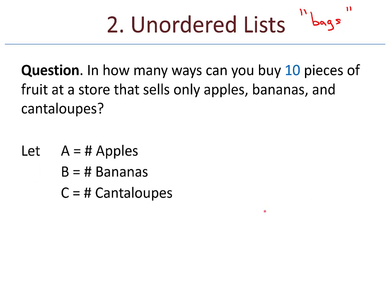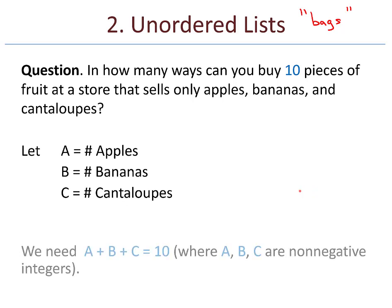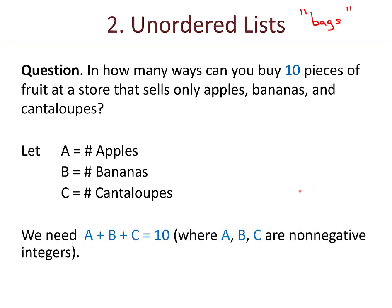So let A be the number of apples, B be the number of bananas, and C be the number of cantaloupes. As an algebra problem, I'm really trying to find solutions to A plus B plus C equals 10, where A, B, and C are non-negative integers. So I am allowed to have zero for one of my A, B, or C, or for a couple of them even.